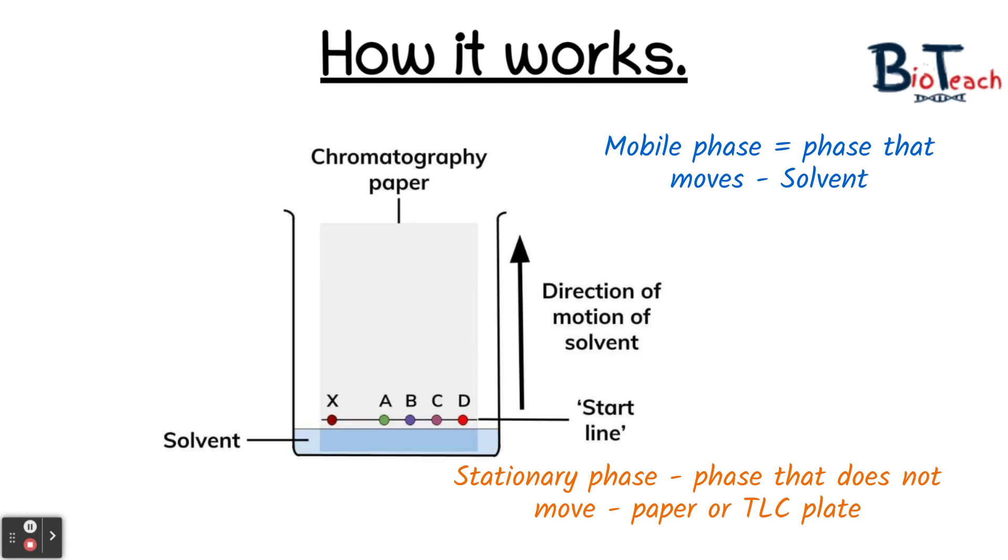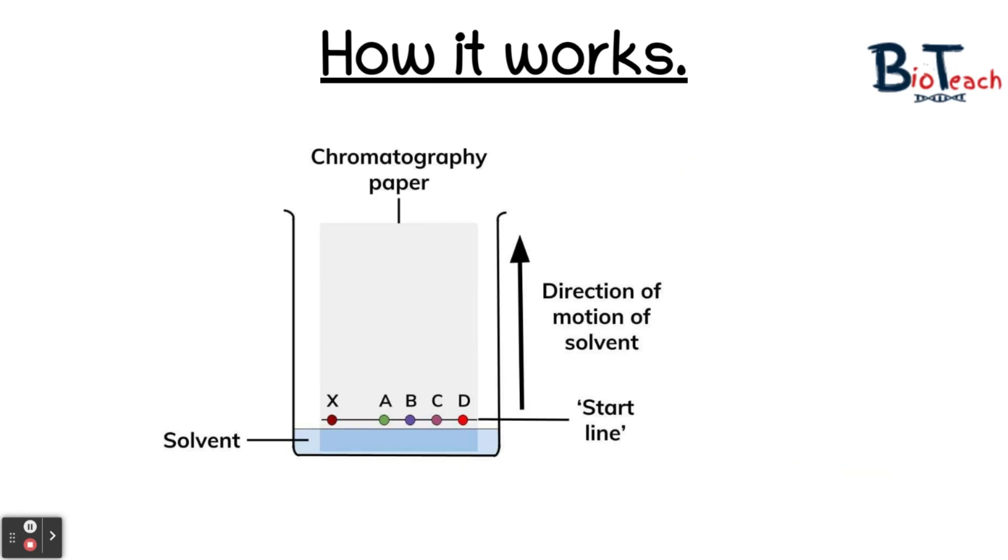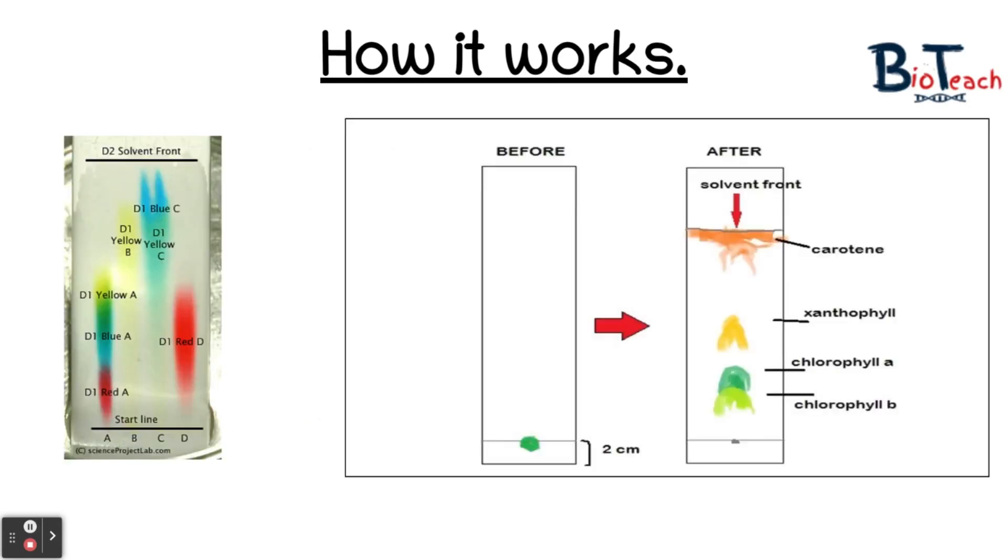The mobile phase moves through the stationary phase and in doing so picks up the compounds that are to be tested. Usually you place your compounds on the bottom line where you've spotted them, as you can see on this diagram. As the mobile phase continues to travel through the stationary phase, it takes the compounds with it and creates that drag effect you saw in the previous image. At different points in the stationary phase, the different components of the compound are going to be absorbed and stop moving with the mobile phase. This is how the results of any chromatography test are obtained.